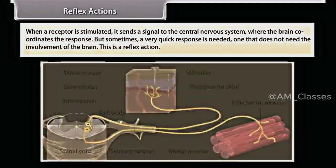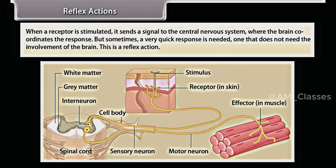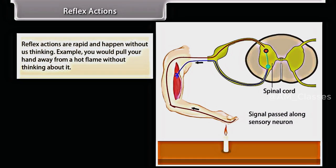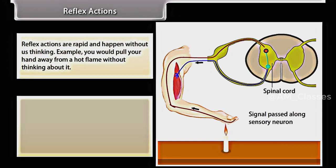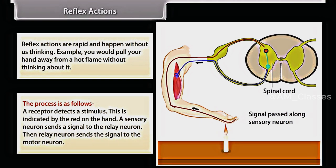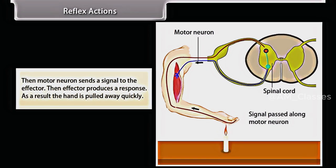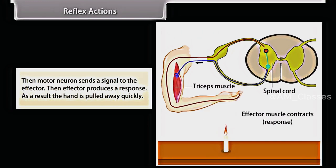When a receptor is stimulated, it sends a signal to the central nervous system where the brain coordinates the response. But sometimes a very quick response is needed — one that does not need the involvement of the brain. This is a reflex action. Reflex actions are rapid and happen without us thinking. For example, you would pull your hand away from a hot flame without thinking about it. A receptor detects the stimulus; a sensory neuron sends a signal to the relay neuron; the relay neuron sends the signal to the motor neuron; the motor neuron sends a signal to the effector; and the effector produces a response — the hand is pulled away quickly.